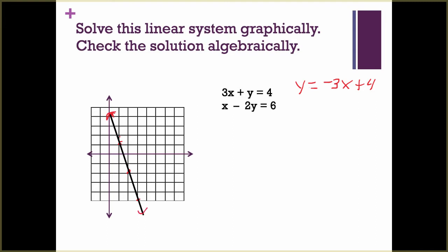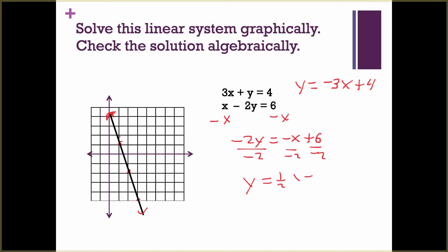Then we have x minus 2y equals 6. We subtract x to move it over, we get negative 2y equals negative x plus 6. Divide by negative 2, and we get y equals one-half x minus 3. So for this line, we start at negative 3 and go up 1 over 2 repeatedly, and we have our line.